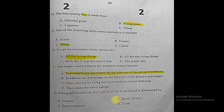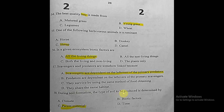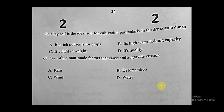Question fifty-eight: during soil formation, the type of soil to be produced is determined by the parent material.